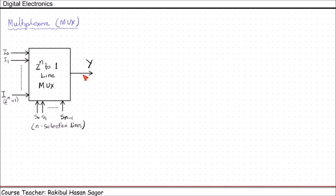Now, how it operates. For each unique selection combination, whatever data that is available in the corresponding input side, that will be delivered to the Y output line.